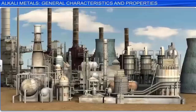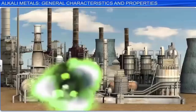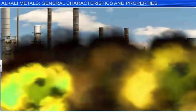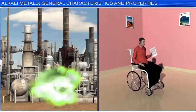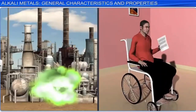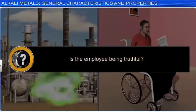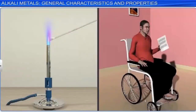Applying our knowledge to a problem: an explosion occurred in a chemical storage tank at Acme Chemical Company. An employee states that the potassium nitrate being stored in the tank must have been responsible for the green flames he observed. However, since we just learned that the presence of potassium gives a lilac flame, we must conclude that the employee is not being truthful.